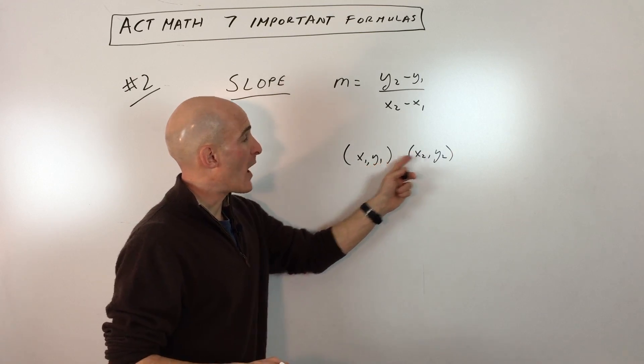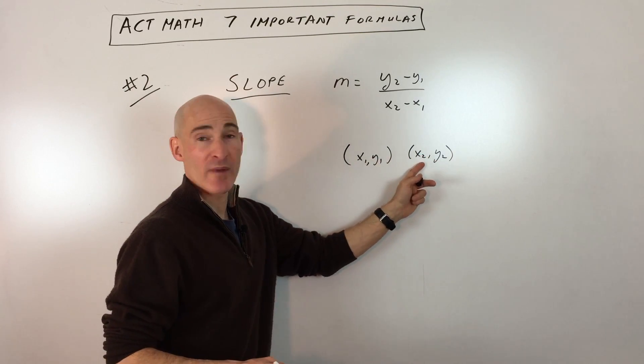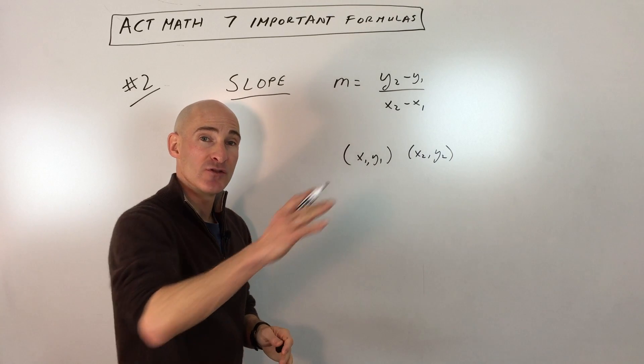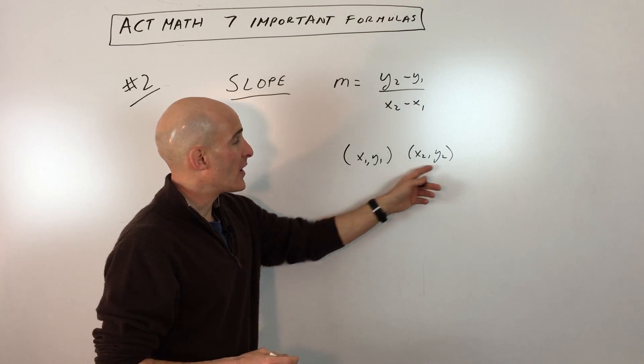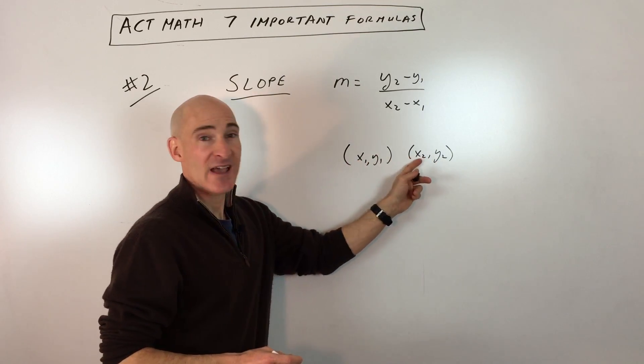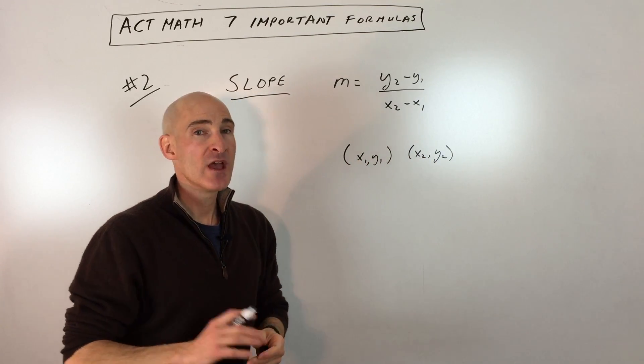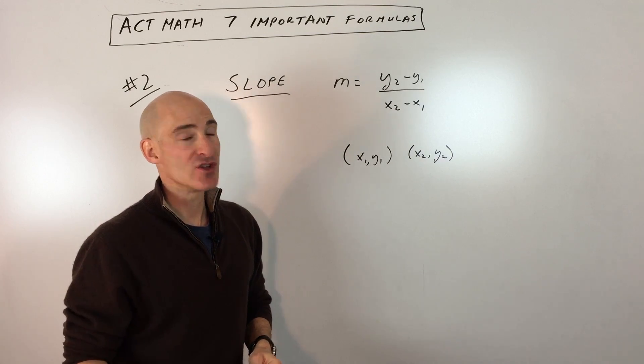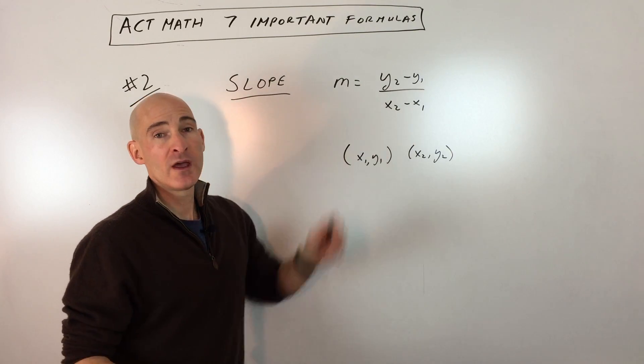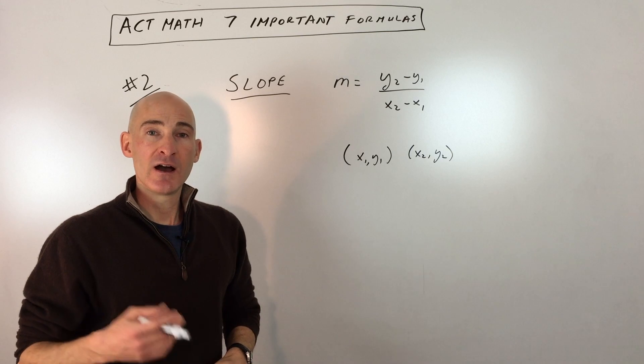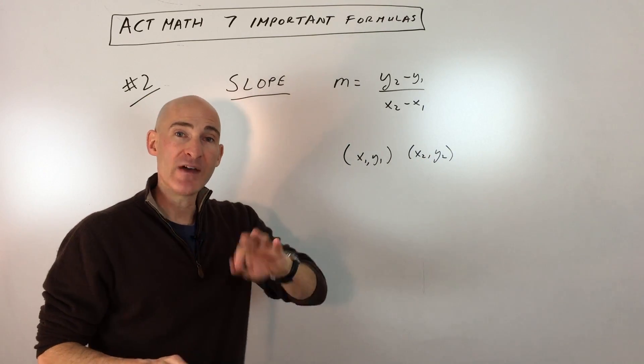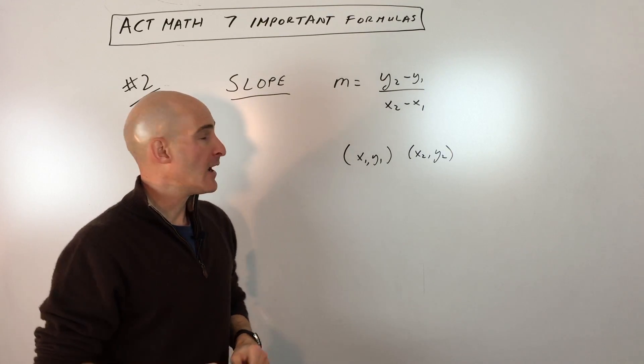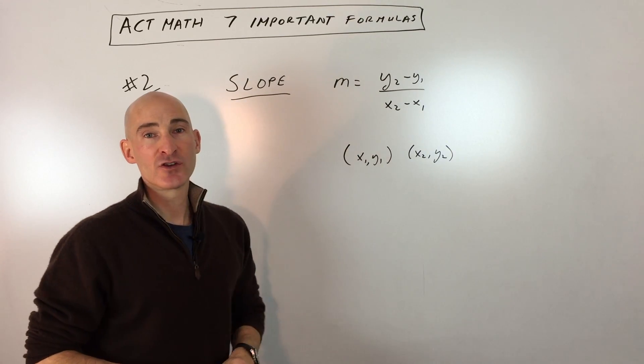Or you can reverse it. You could say Y1 minus Y2 over X1 minus X2. Again, that'll also give you an idea of the angle of the line. But what you don't want to do is do Y2 minus Y1 over X1 minus X2. See how I switched up the order? You don't want to do that because you'll get a different result. So knowing slope is important for the ACT. Things like whether lines are parallel, they have the same slope or perpendicular, they have the opposite reciprocal slopes. But knowing this formula is definitely a good one for the ACT.